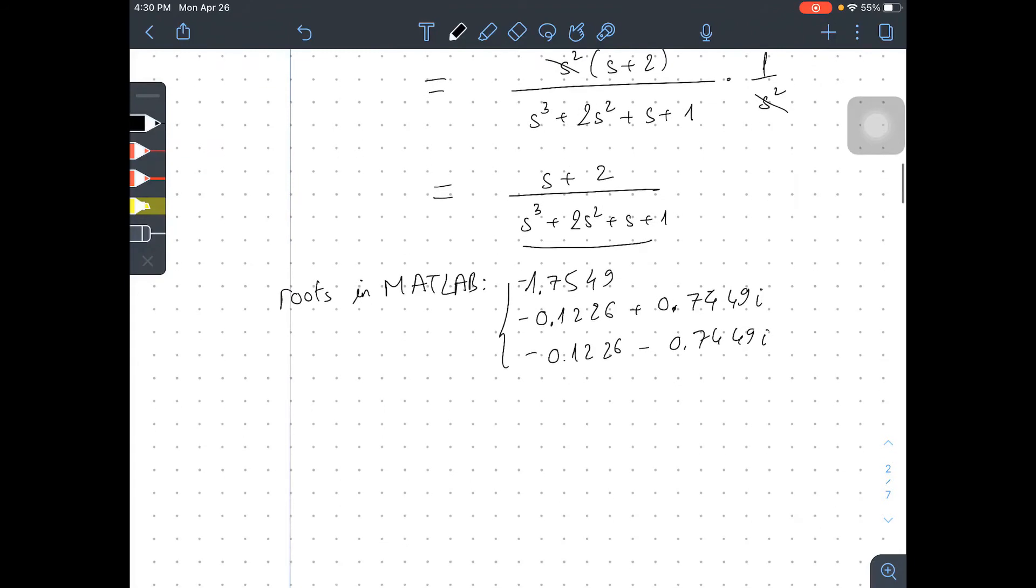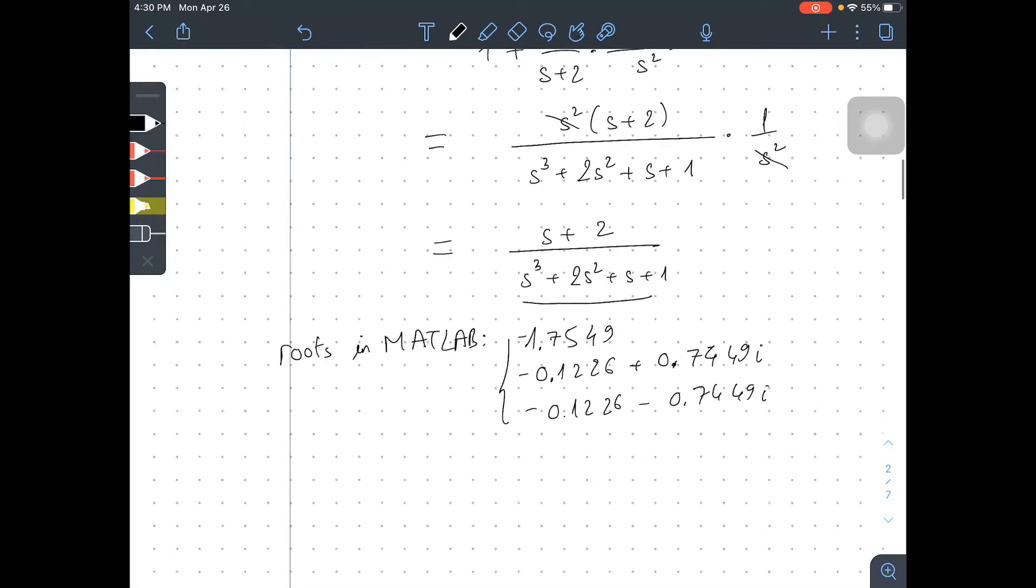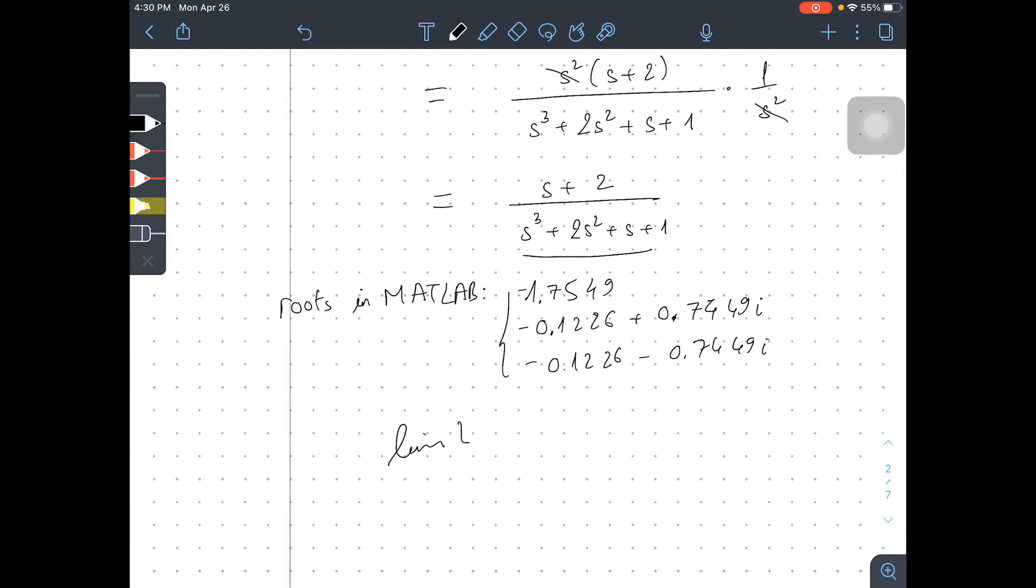And now it's stable. And as s goes to zero, the limit equals zero, so we have perfect tracking.